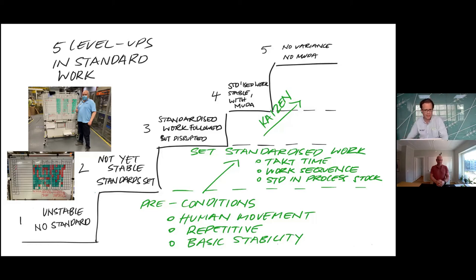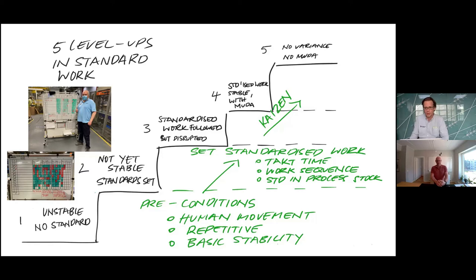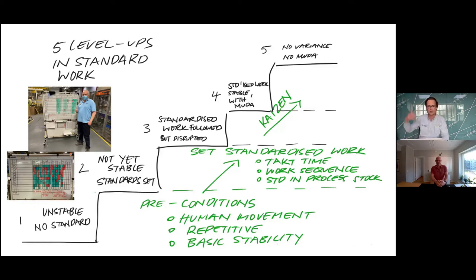Mr. Kato told us there are certain preconditions for standardized work. Fundamentally it needs to be based on human movement — time is a shadow of motion, as he said. If there's no operator work, it doesn't make sense to apply standardized work, which focuses almost exclusively on the work of the operator. The work also needs to be repetitive — we need recognizable cycles in order to see it again and again, optimize it again and again, and reap the benefit again and again.